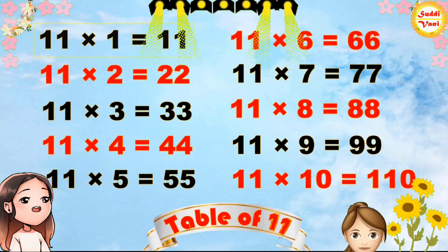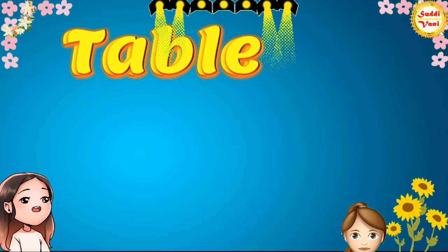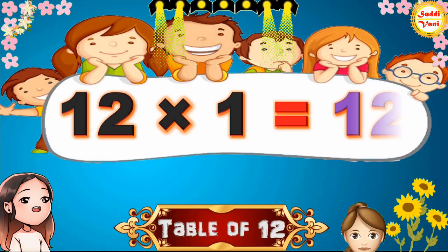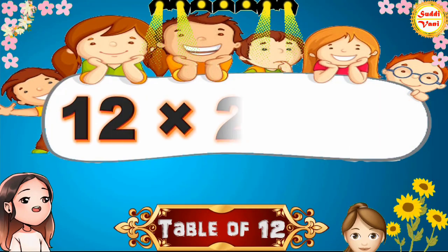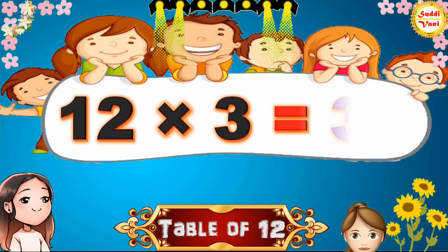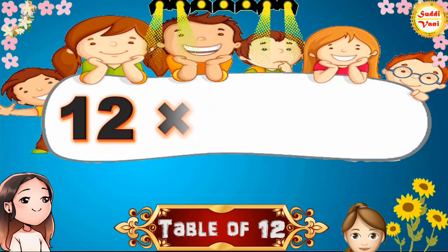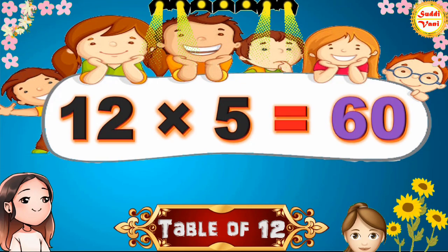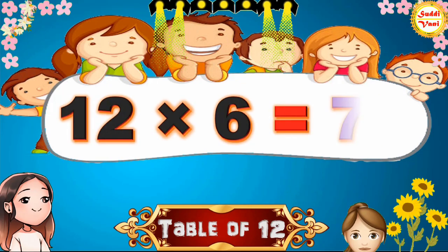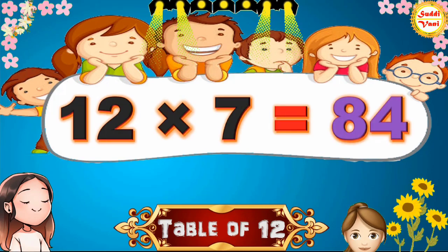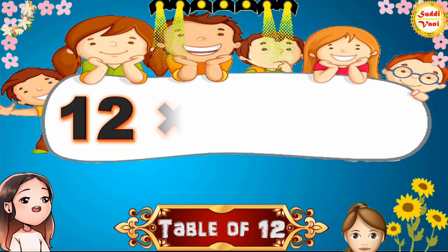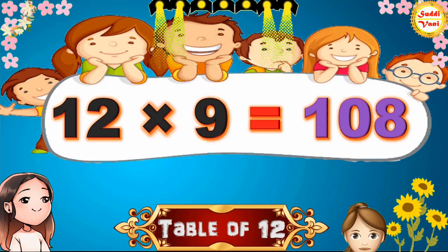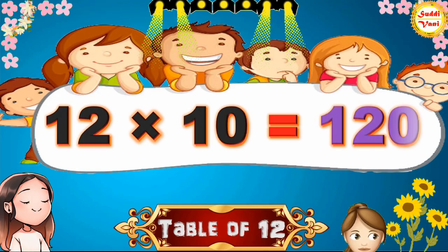Hello children, we will learn table of 12. 12 × 1 = 12, 12 × 2 = 24, 12 × 3 = 36, 12 × 4 = 48, 12 × 5 = 60, 12 × 6 = 72, 12 × 7 = 84, 12 × 8 = 96, 12 × 9 = 108, 12 × 10 = 120.